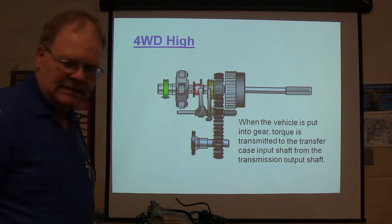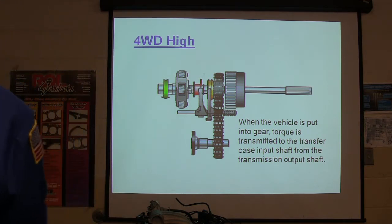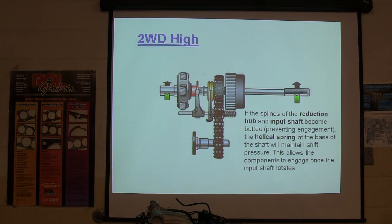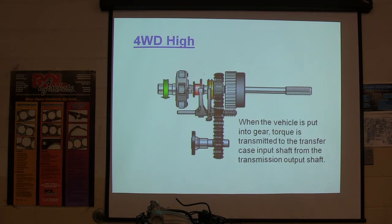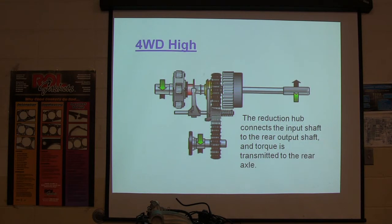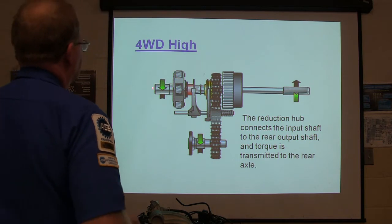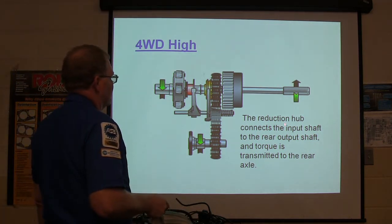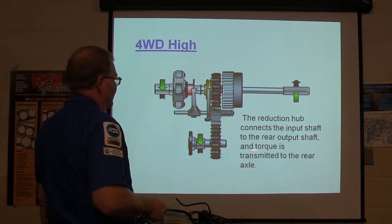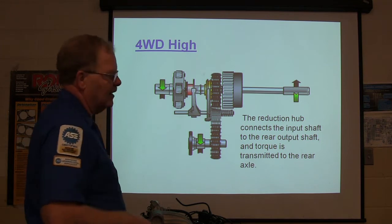That allows the components to engage once the shaft rotates. When the vehicle is in gear, torque is transmitted to the transfer case input shaft from the transmission output shaft. That's not complicated — that's four-wheel high. The reduction hub connects the input shaft to the rear output shaft, and torque is transmitted to the rear axle.